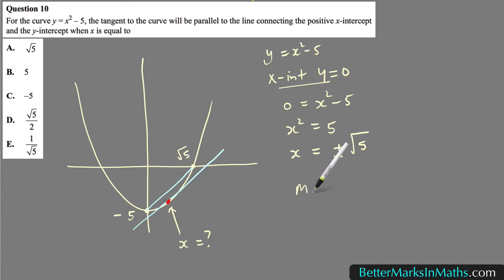If you say the gradient of that tangent is equal to the gradient on the curve at that point where the tangent touches the curve, then this side will give you an expression that's got an x in it.